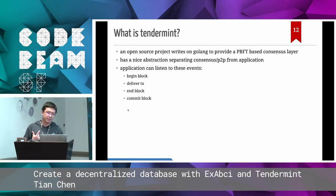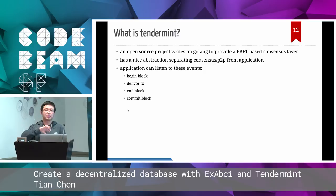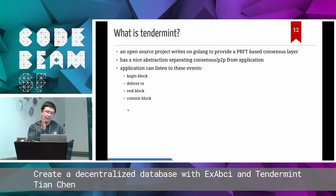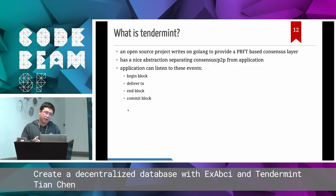Let's talk about Tendermint. Tendermint is an open source project that provides PBFT consensus. The good part of it is a very nice abstraction layer that separates consensus and peer-to-peer networking from the application. For your application, you don't need to worry about consensus — you just trust that the Tendermint code makes consensus work correctly, and it handles data replication. The Tendermint application sends your application messages through TCP, and you just process those messages. Your application then has a good foundation for public verifiability and decentralization. It provides a list of events for the application to listen to.